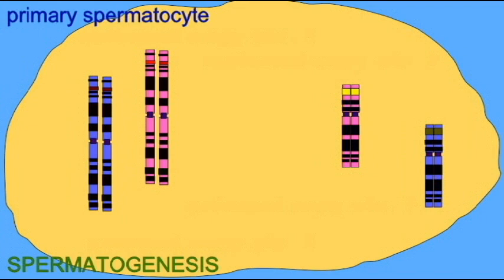So in the testes, both spermatogenesis, the meiosis which produces the haploid spermatids, and spermiogenesis, the modifications which produce the functional spermatozoa, occur.